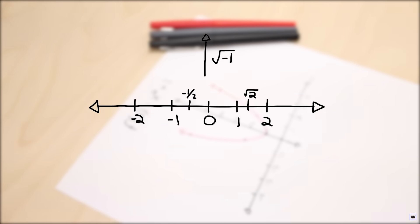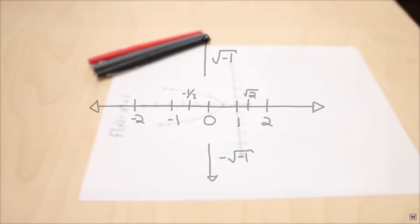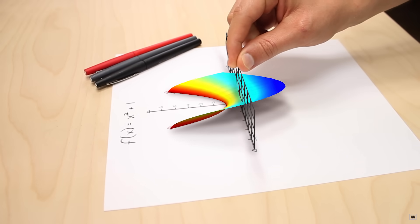Algebraically, this new dimension has everything to do with a problem that was considered impossible for over 2,000 years: the square root of negative 1. When we include this missing dimension in our analysis, our parabola gets way more interesting.